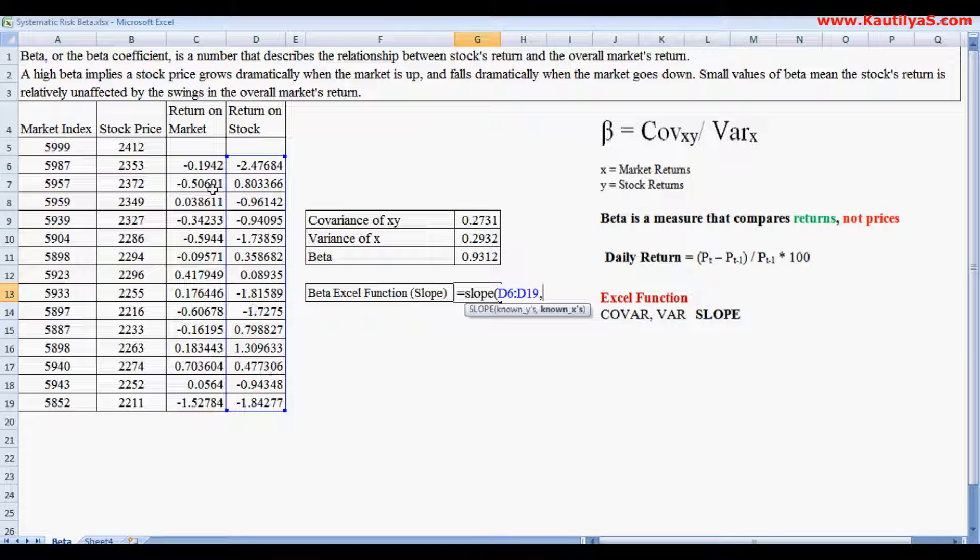Then known X values, X values are market index values, select market index values and click enter. So here we got a beta of 1.